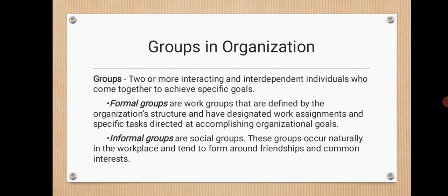Groups in organization. There are two types of groups in an organization: formal and informal. Formal groups are work groups defined by the organization structure and have designated work assignments and specific tasks directed at accomplishing organizational goals. Informal groups, or social groups, occur naturally in the workplace and tend to form around friendships and common interests.